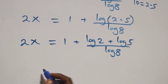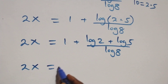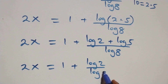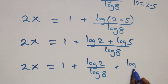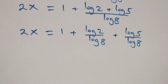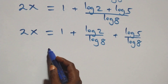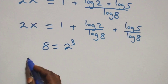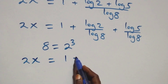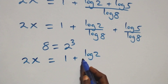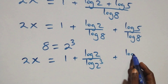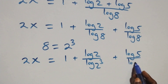Here we separate it into two fractions: 2x equals 1 plus log 2 over log 8, plus log 5 over log 8. Also, 8 can be written as 2 times 2 times 2, that's 2 cubed. So what we have becomes 2x equals 1 plus log 2 over log 2 cubed, plus log 5 over log 2 cubed.